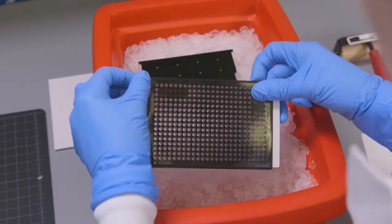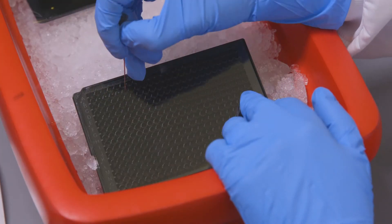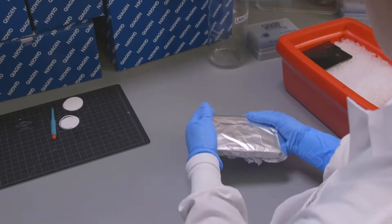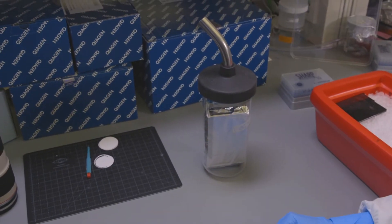We then seal the plate and punch small holes at the top of every well to prepare the samples for freeze-drying. The plate is flash-frozen and placed onto a lyophilizer overnight.